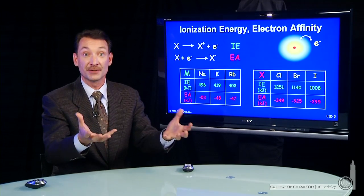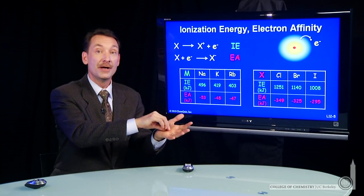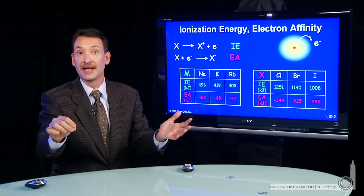Sodium chloride, for instance, when that's formed, sodium gives up an electron and gives it to chlorine.